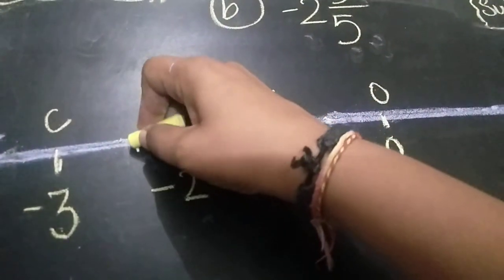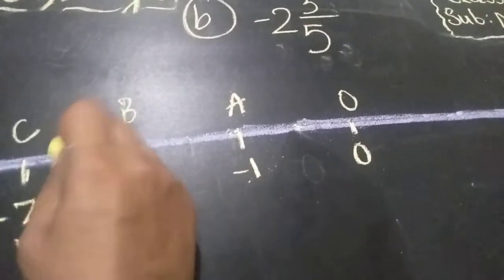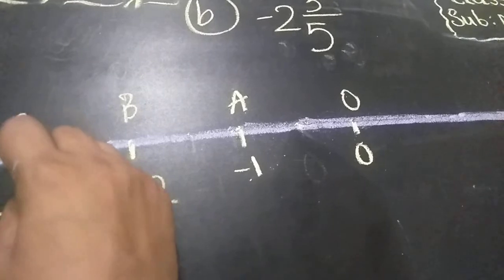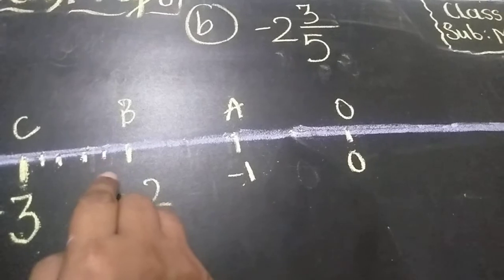How many, bachche? 1, 2, 3, 4 and this is 5th part. Which fraction you have to represent? 3 by 5.